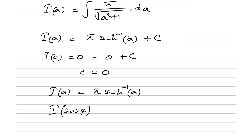So we need I(2024), which is our original integral. Therefore the answer is I(2024) = π · arcsinh(2024). If you like this type of video, please subscribe to the channel. Thank you for watching.